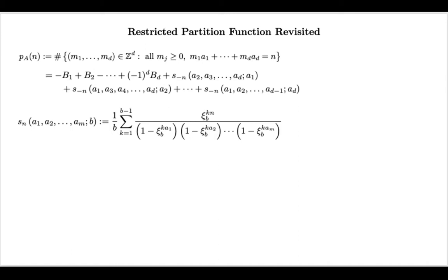Let me remind you from the last video how Fourier-Dedekind sums appear. So we looked at the restricted partition function, p_a of n. a is a set of positive integers, a_1 through a_d. And then through generating function setup, the constant term computation, we came up with this formula for the restricted partition function.